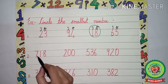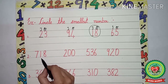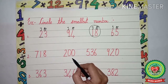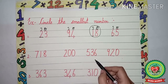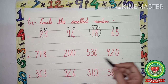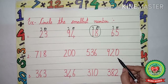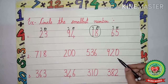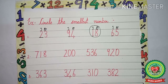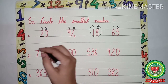Let us do another example. The numbers are 718, 200, 536, 920. Again, our first step is to write down the place value chart, so first we will write down the place value chart for ones, tens, and hundreds for each number.